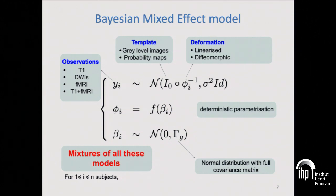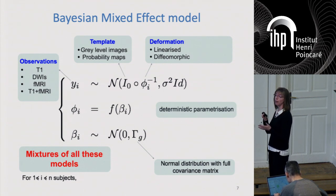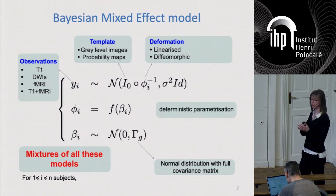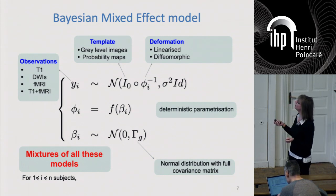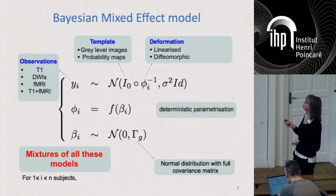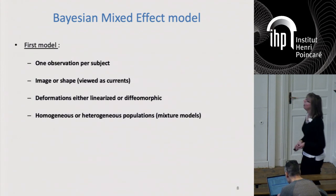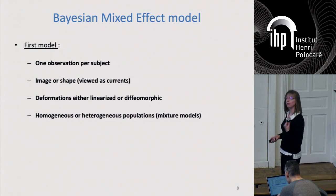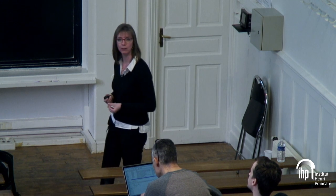We've done this for gray level images, diffusion, functional images, and couplings of the previous ones. We estimated templates like gray level images or probability maps giving, for example for the brain, probability at each location of gray matter, white matter and CSF. That is important to deal with voxels that have partial volume effect. We also handled different deformations and heterogeneous populations. We were happy — well, almost — but this was assuming a very strong constraint: I only have one image per subject, so doing cross-sectional analysis.